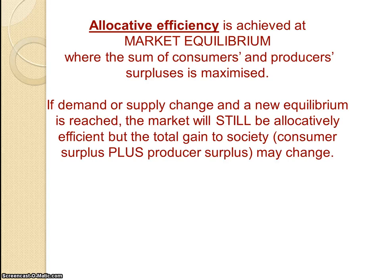Sometimes in NCA exams, you'll see them say 'explain why allocative efficiency will increase' — which is not quite accurate, to be honest. But what they mean is that the total gain to society, the area of consumer and producer surplus, might have increased or decreased.